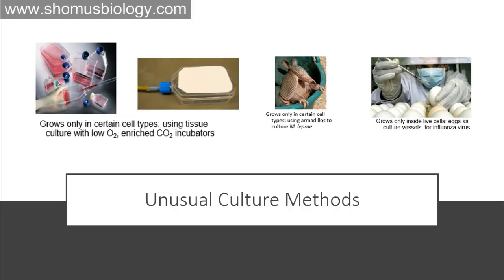Some unusual culture methods exist for microorganisms that grow only in certain cell types, such as using tissue culture with low oxygen and enriched CO2 incubators. For example, Mycobacterium leprae can only be grown inside certain cell types, so we use armadillos to culture it. Additionally, bacteria can be grown inside living cells, and eggs are used as excellent culture vessels for influenza virus. Eggs serve as the healthy host in which the virus can grow, particularly for understanding the growth pattern of influenza. These are natural sources used as culture media rather than synthesized ones.